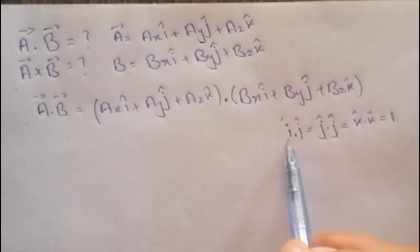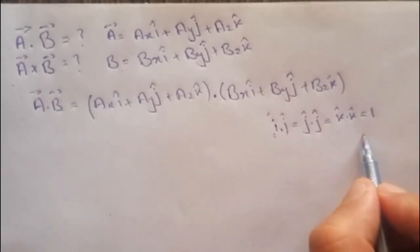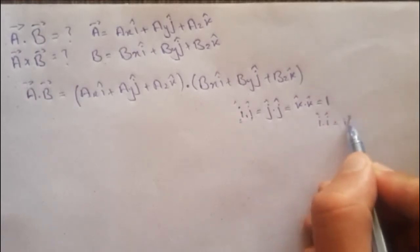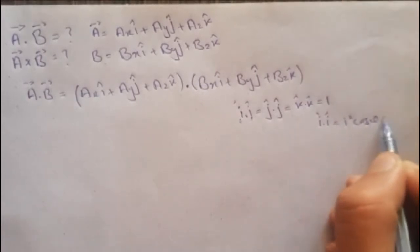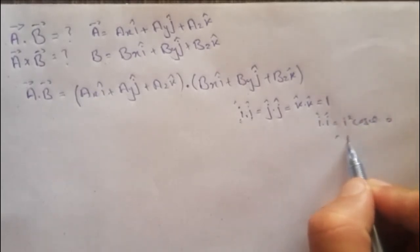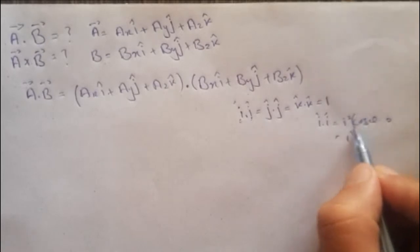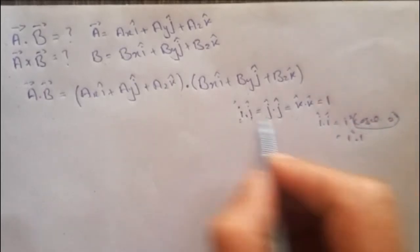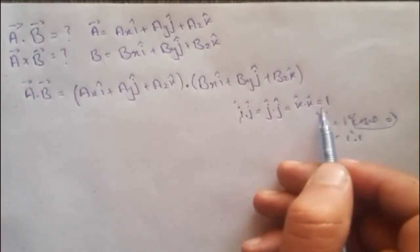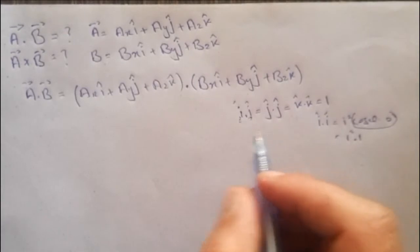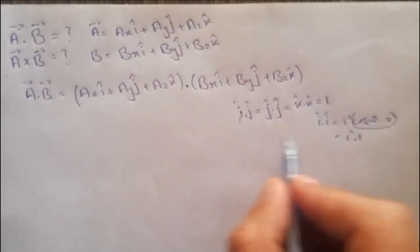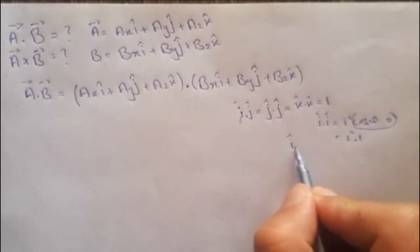These are equal to one because the i and i components are both along the x-axis and are parallel to each other. By the dot product rule, i·i equals i² cos(θ), and when θ equals zero, cos(θ) equals one, so i·i equals one. Similarly, j·j equals one and k·k equals one.